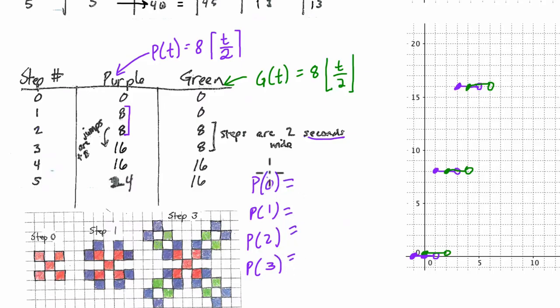So how do we do this? Well, P(0), I'm not going to write out each step. It'll take too long, but I'm going to show you. So P(0) means plug in zero for t. So we look inside the brackets, and we do the division first. Zero divided by two is zero. Now when we say round up, we round up or down to the nearest integer or whole number. So in our case here, zero divided by two is zero, and we're already at an integer, so we don't need to round. And then zero times eight is zero. That makes sense. Purple is at zero at step zero.